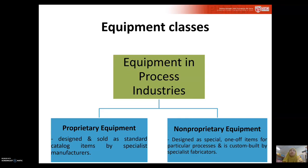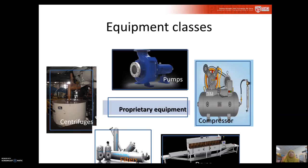I would like to introduce the equipment classes. You must know that there are two types of equipment: proprietary equipment and non-proprietary equipment. Proprietary equipment is designed and sold as a standard catalog item by specialist manufacturers. Non-proprietary equipment is normally custom built — it is a special design. Examples of proprietary equipment include pumps, compressors, dryers, filters, and centrifuges.